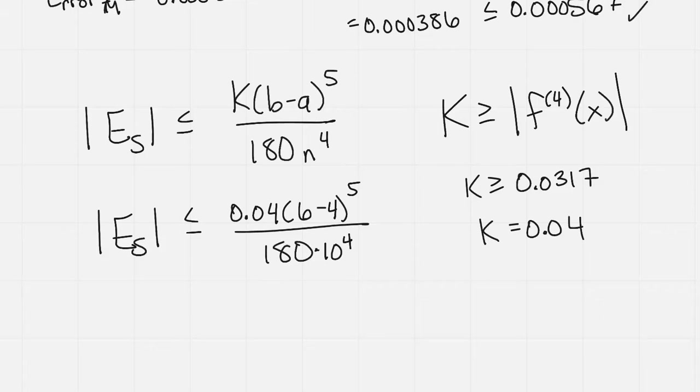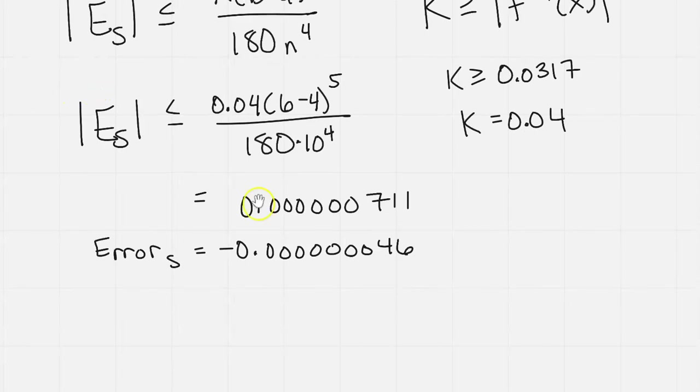So the absolute value of the error is going to be less than or equal to the 0.04 times 6 minus 4 to the fifth power, all over 180 times 10 to the fourth. And again, that 10 is because I had worked on the problems with n equals 10. And so this is going to be equal to 0.000000711. Now, the error I got when I did Simpson's rule was negative 0.000000456. So the absolute value of that would be positive. And because it has that extra 0 in there, so the absolute value of this would be less than or equal to what was my error bound. So it's all falling within as it should. And again, the error bound, usually that's where you stop. That's where the book says, okay, you've calculated the error bound. Now you know what it'll be. But it's good to see that on the problems we actually did, it's falling within that bound.